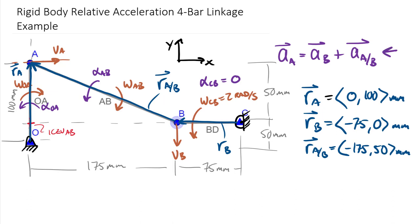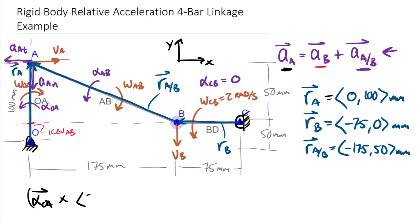Now rewriting the equation with all tangent and normal terms in alphas and omegas, using a color scheme — black for acceleration of A, red for B, and purple for relative. Acceleration of point A is in fixed axis rotation around O. The tangential term is alpha of OA crossed with RA. The normal term is omega of OA squared times the negative R vector. So the first term is alpha of OA crossed into [0, 100], and the normal term is omega of OA squared times [0, 100] in the negative direction.